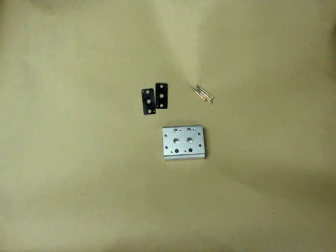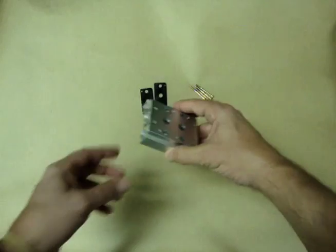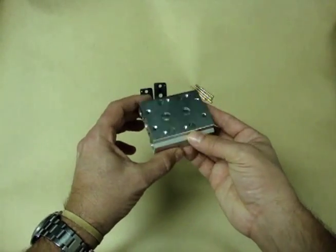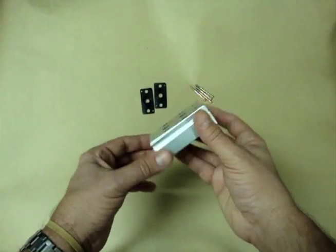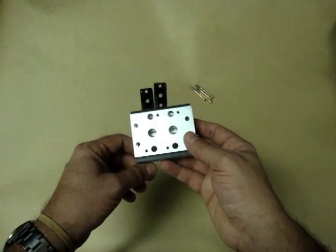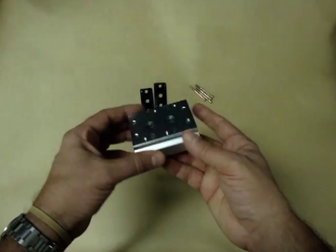This video will show you what the integrated aluminum base mounted manifolds are all about. The Fright Props manifold for solenoids looks like this. This is a two solenoid manifold.